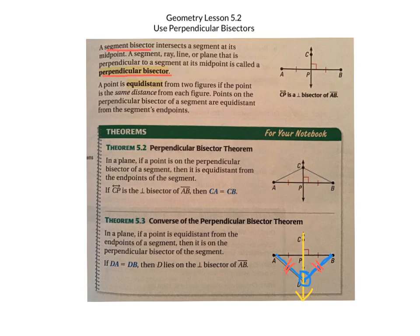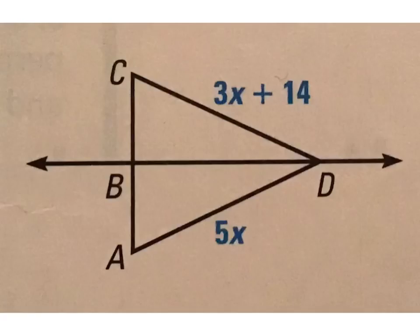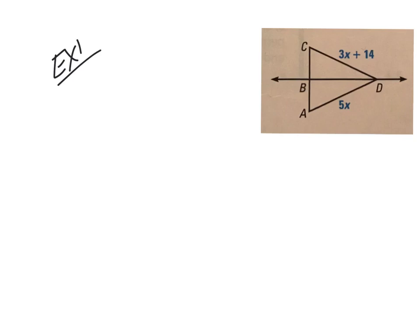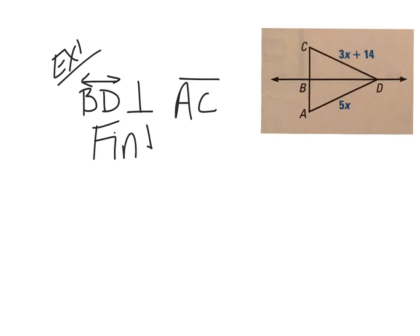Let's look at Example 1. Here's our figure. It tells me that ray BD is the perpendicular bisector of segment AC. Find the measurement of AD. We know BD is the perpendicular bisector, so this line in the middle is perpendicular.